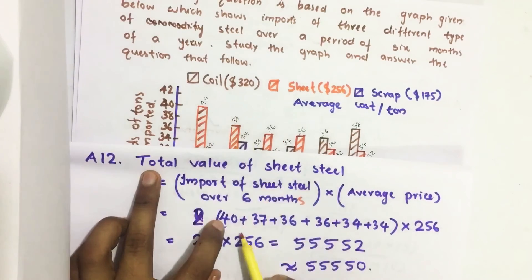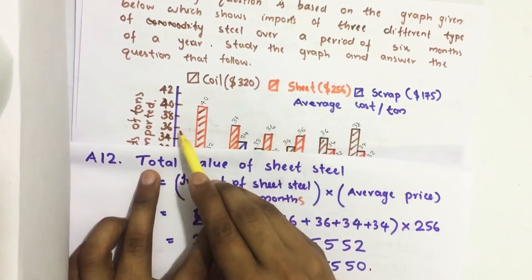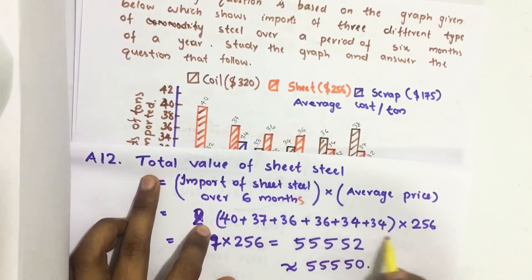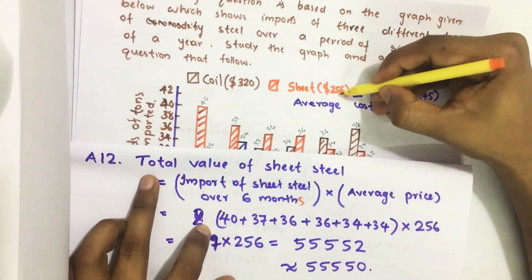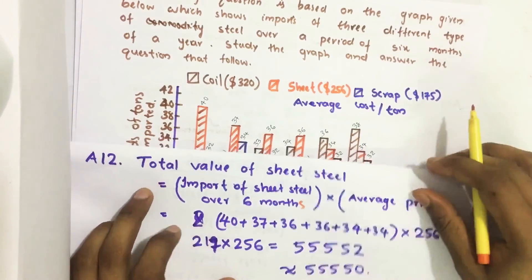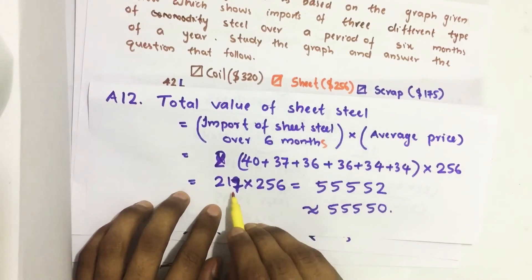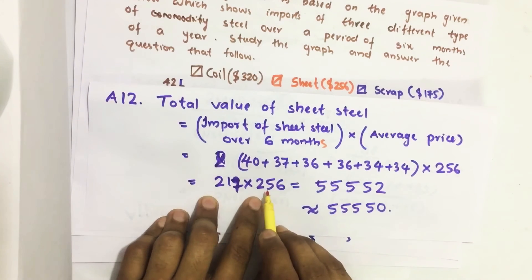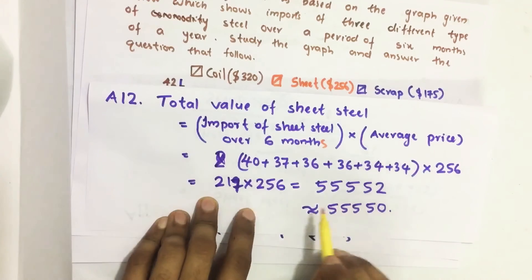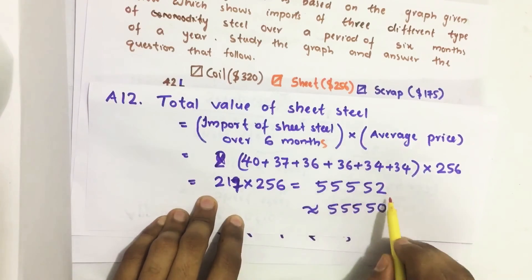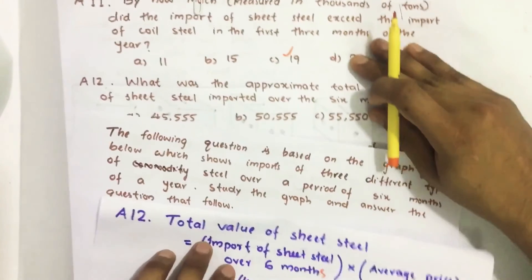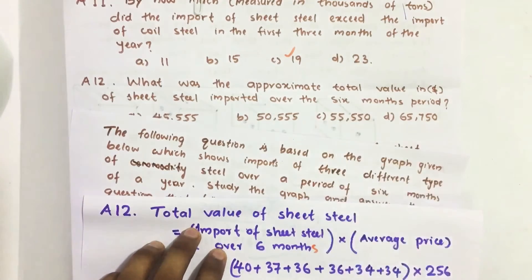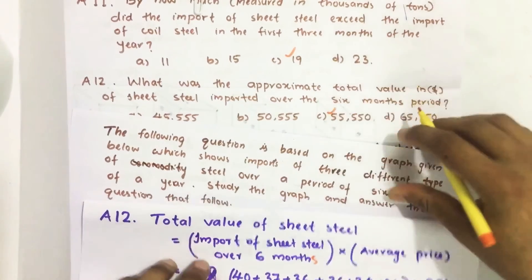In January it is 40, February 37, March 36, and so on for the remaining months. Adding all these and multiplying by the average price of 256, the total import over six months is 217. Multiplying: 217 × 256 = 55,552. Since the question asks for an approximate total, the answer is 55,550.